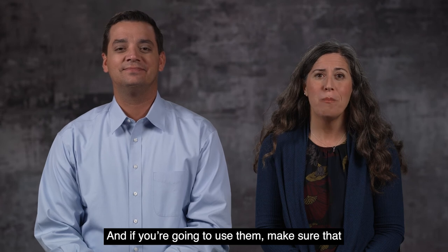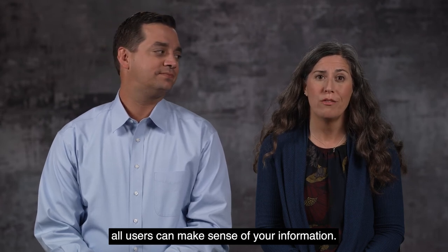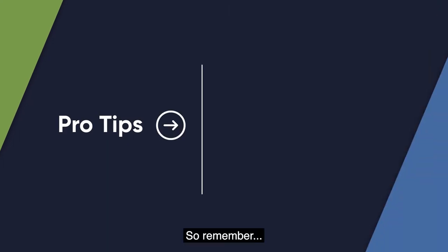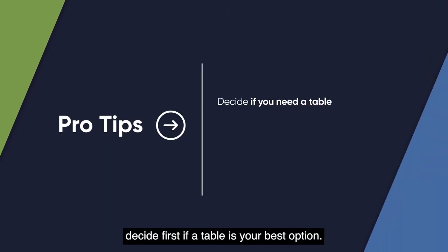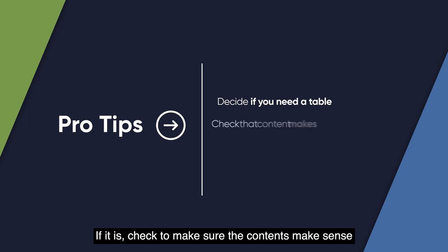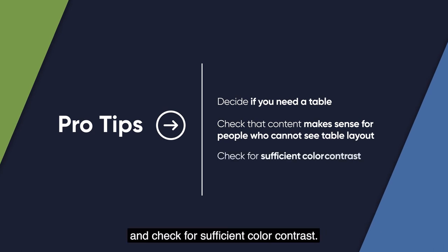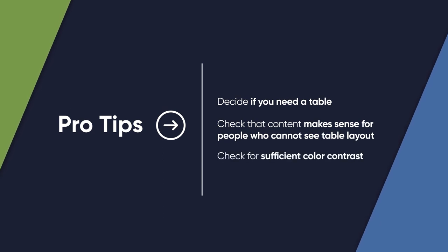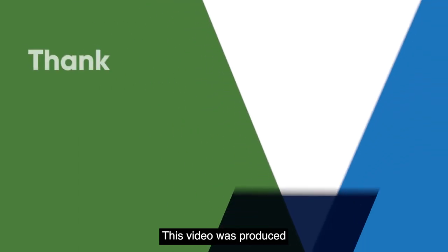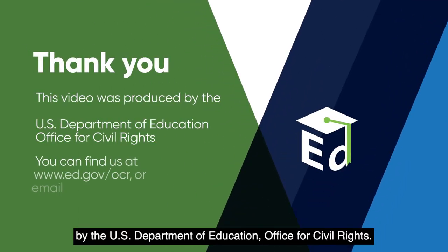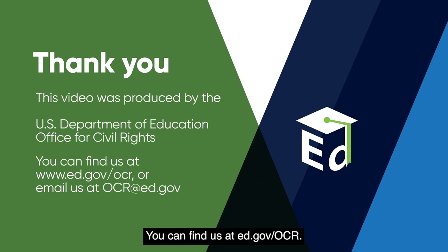Remember: decide first if a table is your best option. If it is, check to make sure the contents make sense for people who cannot visually see the table layout, and check for sufficient color contrast. This video was produced by the U.S. Department of Education, Office for Civil Rights. You can find us at ed.gov/ocr or email us at ocr@ed.gov.